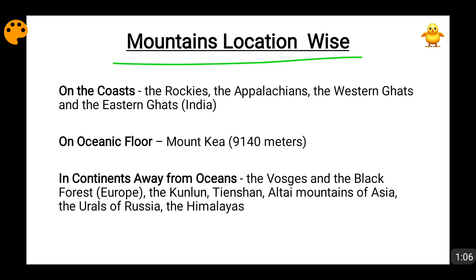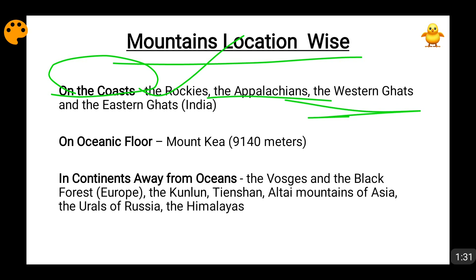Now, mountains which are located at the coast — examples of them are the Rockies in the western United States of America. The Rockies are not exactly at the coast because even to the west of the Rockies there are the Cascade mountain range, coastal mountain range, and Sierra Nevada mountain range. Then comes the Appalachians, which are on the eastern edge of the United States of America. Then comes the Western Ghats on the western edge of the Indian subcontinent and Eastern Ghats on the eastern edge.